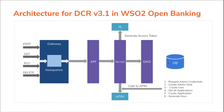The internal API has three layers: the API layer, service layer, and DAO layer. In the API layer, the transport certificate will be validated and the headers will be validated. Then the request will be routed to the service layer where the SSA will be validated based on the specification. Through the service layer, we will be generating access tokens, creating applications, and generating keys for the application. Finally, the DAO layer will save the details coming from the request into the database.